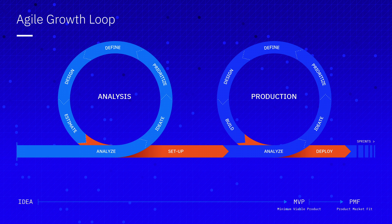In this session we're going to talk about the growth loop. The growth loop is a methodology we've developed to help clients begin working on their projects. It describes two main phases of activity: the analysis phase and the production phase.